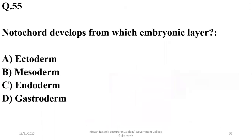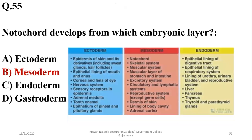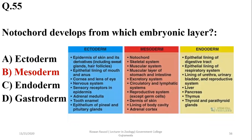Question number 55: Notochord develops from which embryonic layer? This question is about embryonic layer development. These questions are also repeated in past PPSC exam papers. Mesoderm is the right option. Systems like skeletal, muscular, excretory, circulatory, reproductive, dermis of the skin, lining of body cavity, and adrenal cortex all develop from mesoderm.